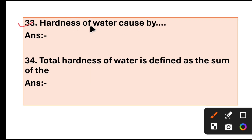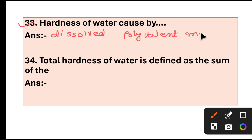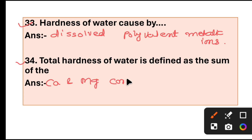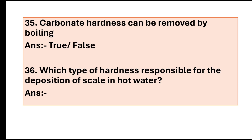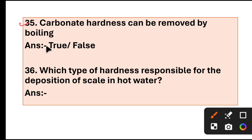Question 33: Hardness of water is caused by dissolved polyvalent metallic ions. Question 34: Total hardness of water is defined as the sum of calcium and magnesium concentration. Question 35: Carbonate hardness can be removed by boiling. Answer: True. Question 36: Which type of hardness is responsible for deposition of scale in hot water? Answer: Carbonate hardness.